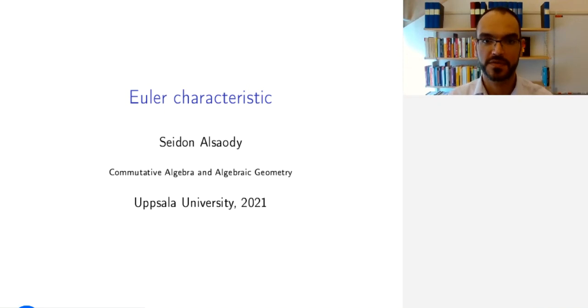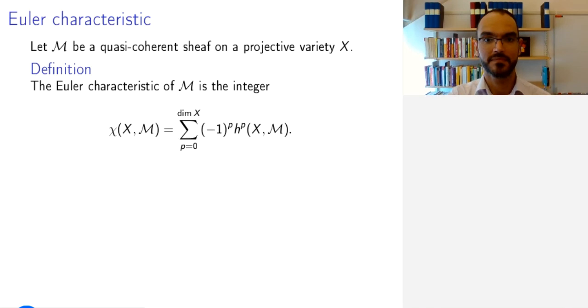One of our motivations to study sheaf cohomology was to be able to compute numerical invariants of quasi-coherent sheaves. And perhaps the most important one is the Euler characteristic. So let's take a look at that.